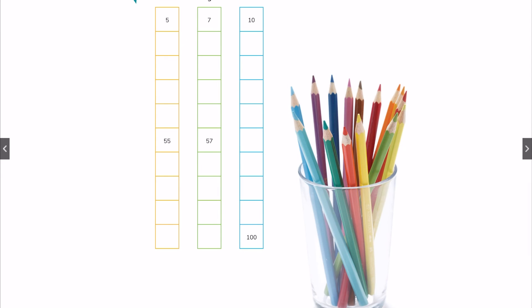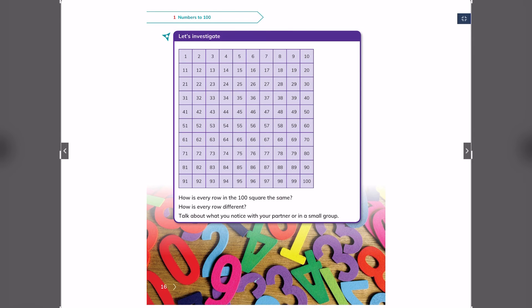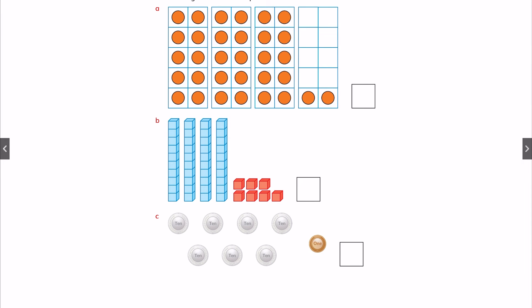There are numbers that you should investigate. It starts from number 1 and ends with number 100. How is every row in the 100 square the same? It starts with 1 and ends with 10. So, what are the ones and tens? How is every row different? You should talk about this, answer it and investigate why it's the same and why it's different. After finishing this, now we go to page 17, which is counting objects.